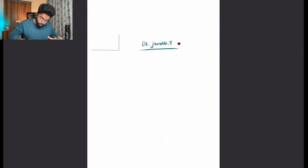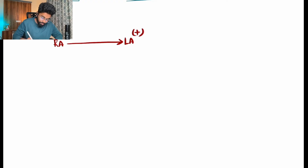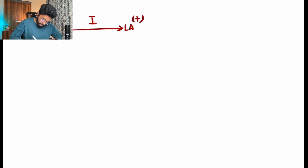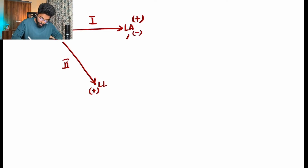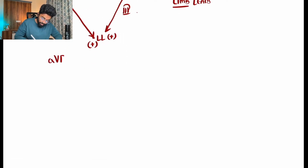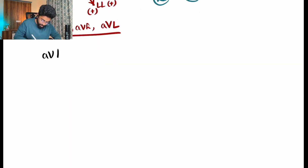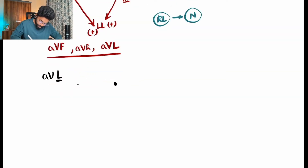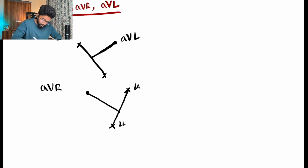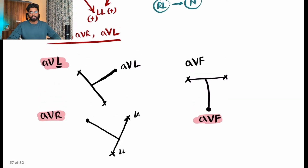Now for lead placement: the negative electrode on the right arm pushes current towards the left arm's positive electrode — that is Lead I. Lead II goes from right arm to left leg. Lead III goes from left arm to left leg. We also have augmented leads: aVR, aVL, and aVF. The right leg is a neutral ground. These six make up the limb leads.